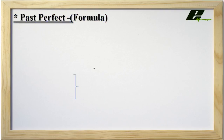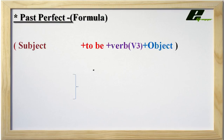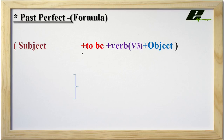Let us jump to the formula of past perfect tense. We know the subject. Then comes 'to be', which means helping verb. In past perfect tense we are going to use the helping verb — a modal auxiliary verb — which is 'had'. Then comes the third form of the verb, also known as the past participle form.